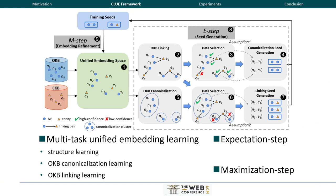In this work, we propose to put the OKB and CKB into a unified embedding space, so that these two tasks can be tackled simultaneously and benefit each other. We propose a multi-task learning model to jointly encode the OKB and CKB. Then, through our newly designed EM algorithm, these two tasks can generate high-quality training seeds for each other to improve performance iteratively.